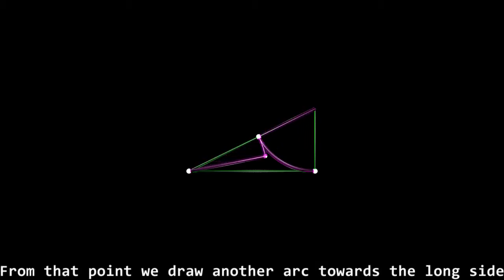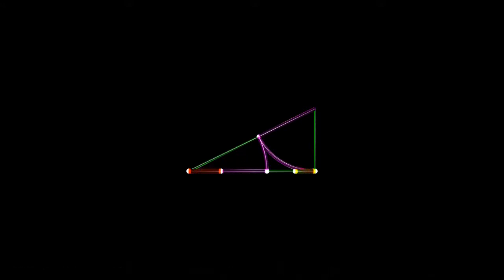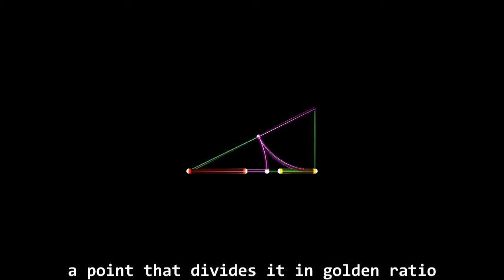From that point, we draw another arc towards the long side, intersecting the long side at a point. A point that divides it in golden ratio.